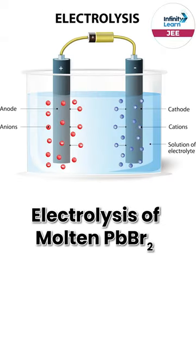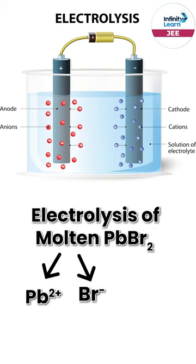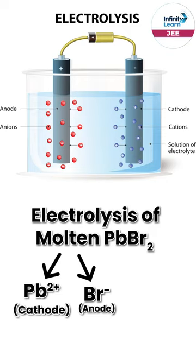Electrolysis of molten PbBr₂. Because if it is molten, one cation will be Pb²⁺ and one anion will be Br⁻. Pb²⁺ will run to the cathode, and Br⁻ will run to the anode. Everyone knows that.